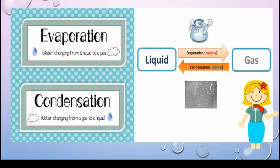To summarize: evaporation is water changing from a liquid to a gas state. Condensation is water changing from gas to liquid. Evaporation happens because of increasing temperature, that is, heating. Condensation happens on cooling.